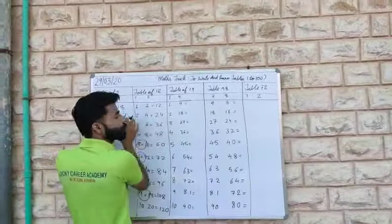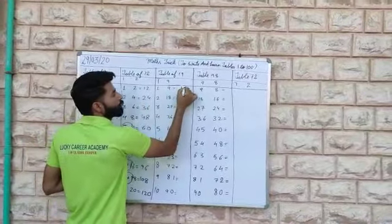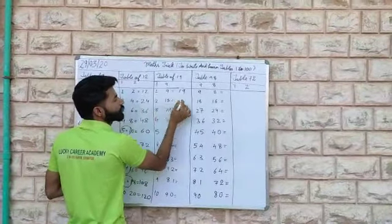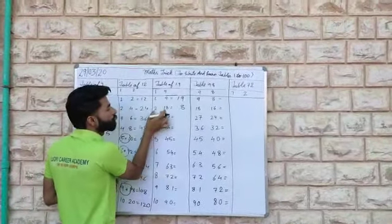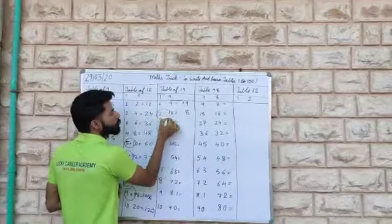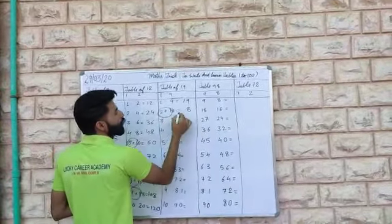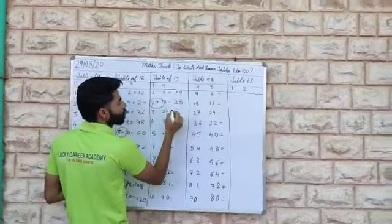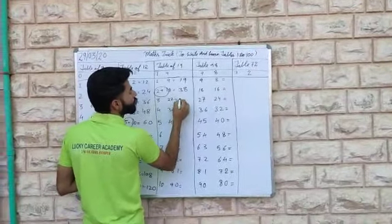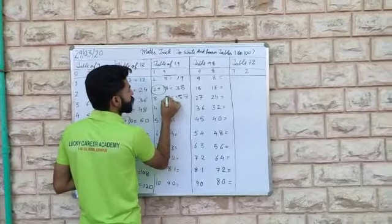The same process what we have done before. This will be 19. This 8 you will write as it is. 1 plus 2 — the same process what I have taught you in table 12, the same trick we will use. Here it will be 7, it will be 57.